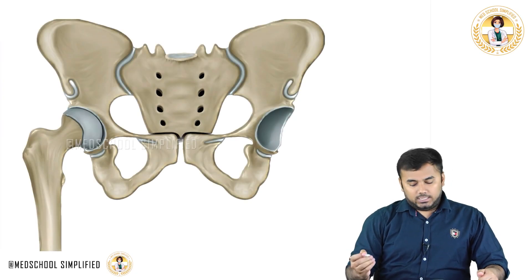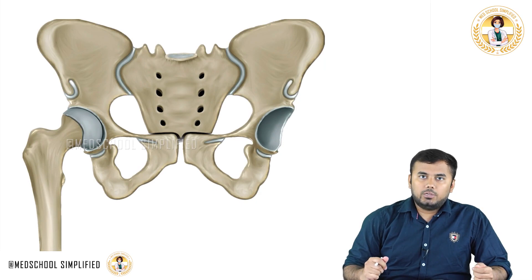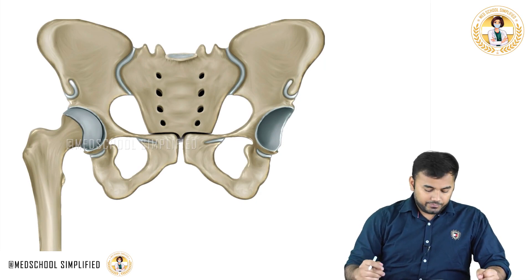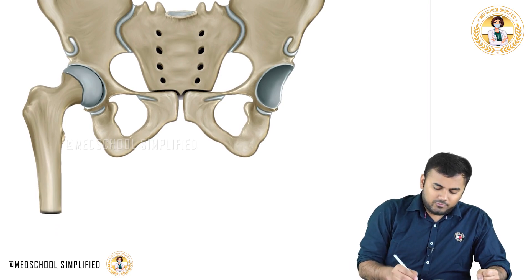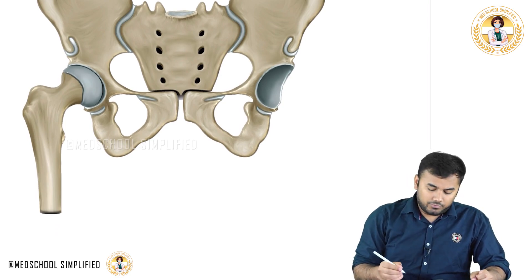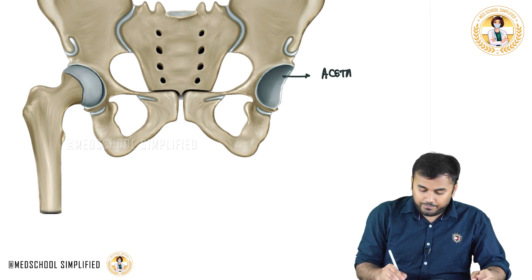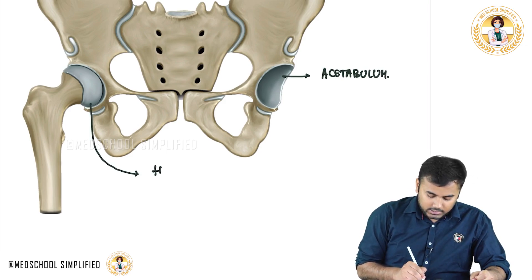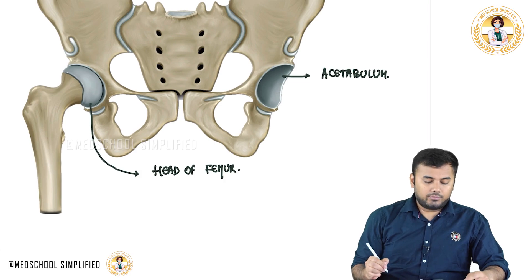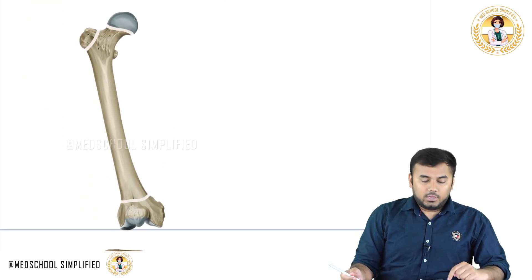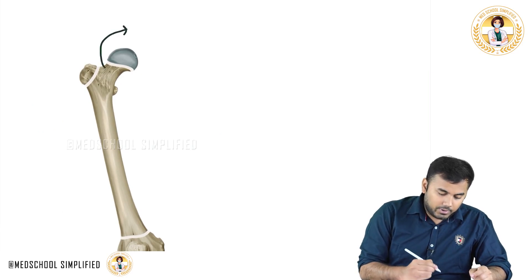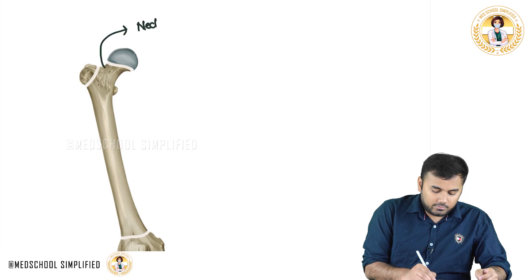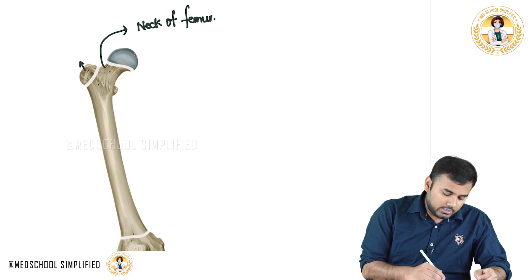In this picture, we are discussing the hip joint and the ligaments located in the hip joint. Some very basics first: this cavity is called the acetabulum, and this part is the head of the femur. The next bone is the femur bone. In the femur bone, the most commonly fractured part is called the neck of the femur. This part is called the greater trochanter.